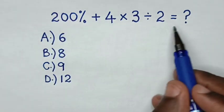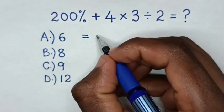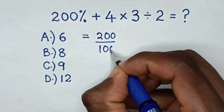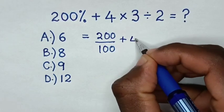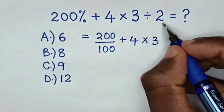So, from this expression, it will be equal to 200% into fraction is same as 200 over 100, then plus 4, times 3, divided by 2.